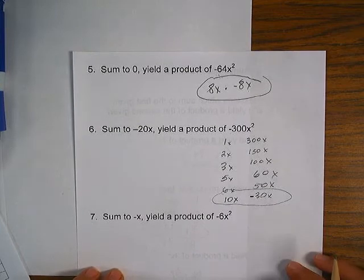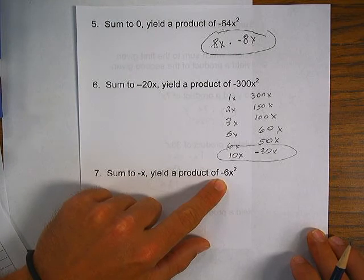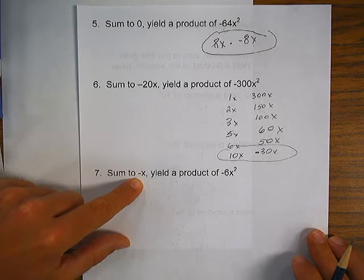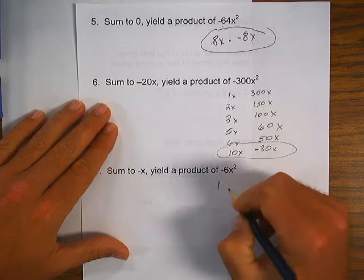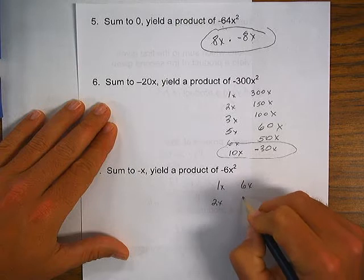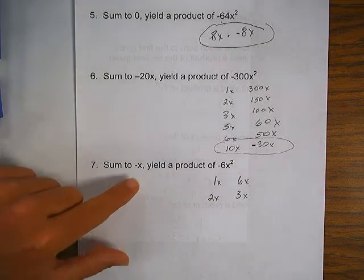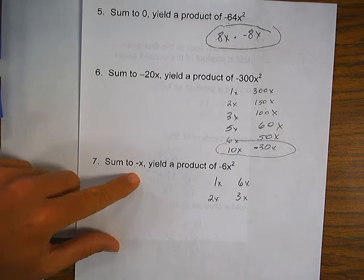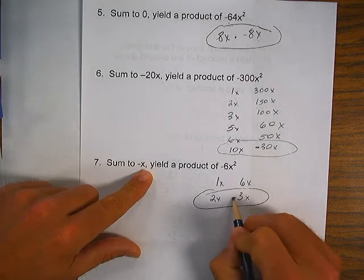And the last one. Product of negative 6x². So, that tells me one positive, one negative, and adds to be negative x. What are the factors of 6? 1 and 6. 1x and 6x. And 2 and 3. 2x and 3x. Can I make one of those negative to make the sum be negative x? Yes. Which one's the most? Negative 3x. Negative 3. Very good.